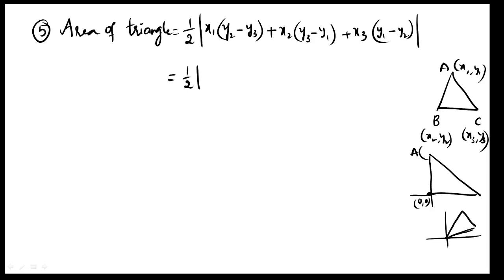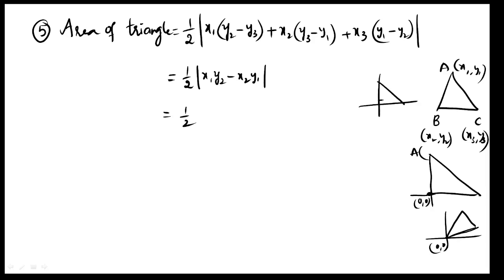One coordinate axis touch-out formula: half modulus of (x1·y2 minus x2·y1). The triangle is on the coordinate axis as a right angle triangle. X-axis distance is a, y-axis distance is b. Direct formula: half modulus a·b.